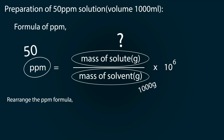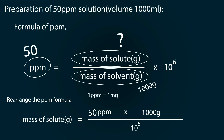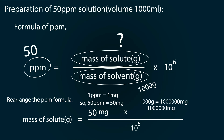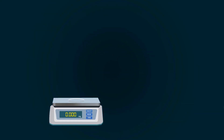Now rearrange the formula: mass of solute equals ppm multiplied by mass of solvent, divided by 10 raised to the power of 6. We have 50 ppm and 1000 grams of solvent. Since 1 ppm equals 1 milligram, 50 ppm equals 50 milligrams. Also, 1000 grams equals 10 raised to the power of 6 milligrams. After calculation, we get the mass of solute as 50 milligrams.